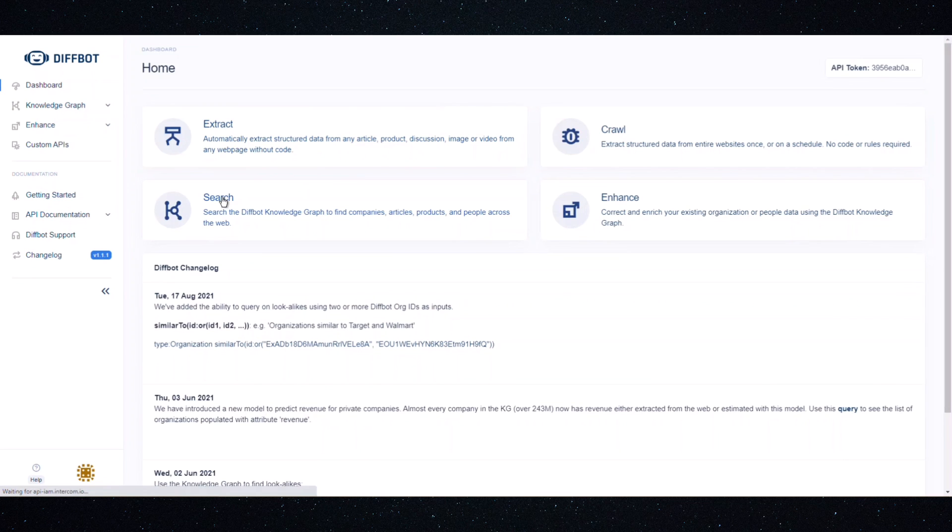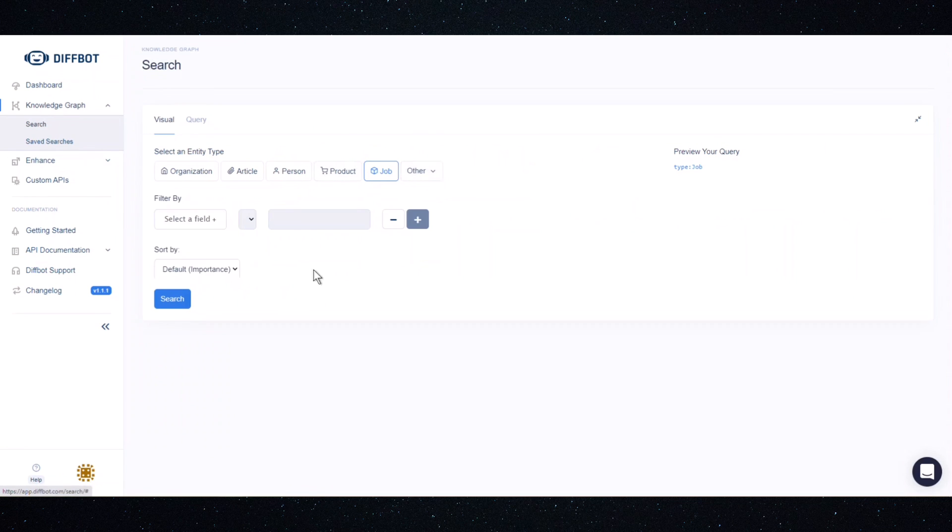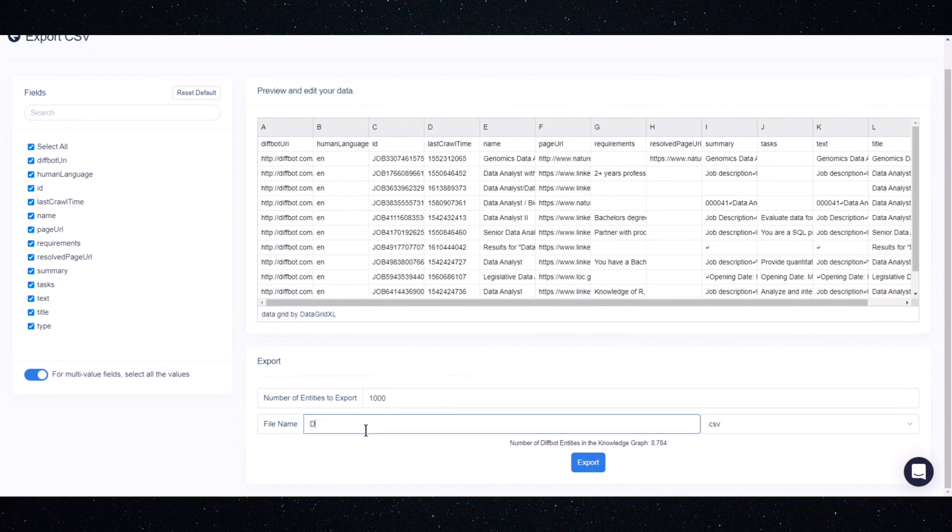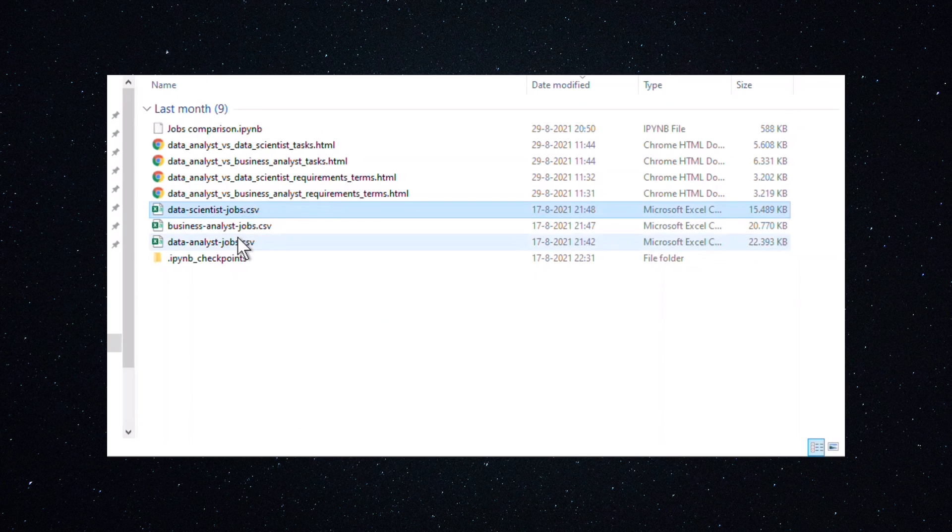Since we want to search for jobs, we will choose entity job, choose the jobs whose titles contain the words data scientist, then the data is ready and you can download the CSV files. I just followed the same procedure for data analyst and business analyst job titles.